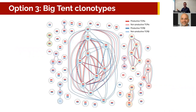Another option — which I call 'big tent clonotypes,' seen proposed in a paper — lumps together any cell that shares any amount of information with any other cell into the same clonotype. This can result in cases where two cells that have nothing in common are called the same clonotype because they each share something with a third cell.